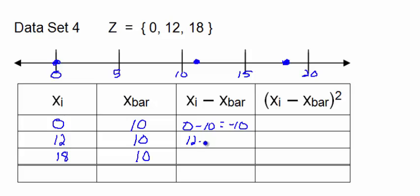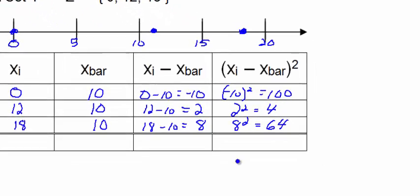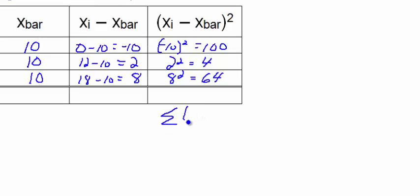So each deviation would be 0 minus 10 which is negative 10, 12 minus 10 which is 2, 18 minus 10 which is 8. Again this adds to 0 so we have to square each deviation. Negative 10 squared is 100, 2 squared is 4, and 8 squared is 64.